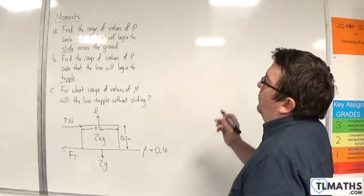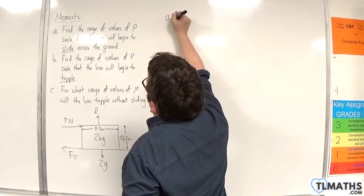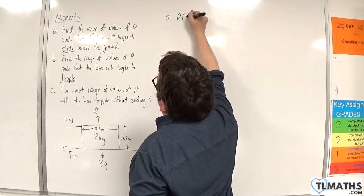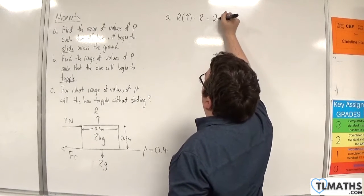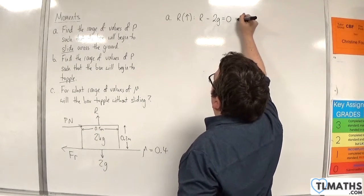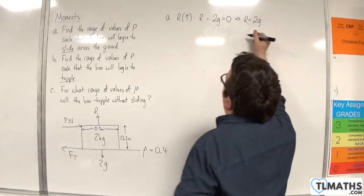First thing I'm going to do for part A is resolve vertically. Taking upwards as positive, we have r take away 2g is going to be equal to 0, so r has to be equal to 2g.